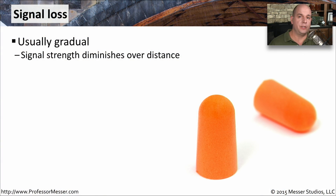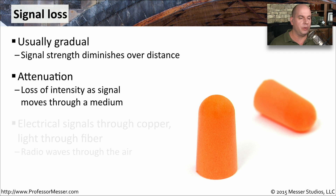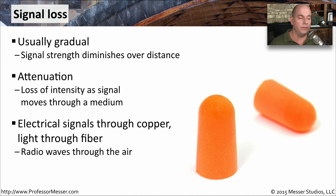Whenever you're working with cabling, whether it's copper or fiber, you always have to be concerned about loss of signal. We generally will have a loss of signal as the distance gets farther for both our copper and our fiber connections. We often refer to this as attenuation — the loss that a signal has as it moves through one of these types of mediums. You have electrical signals through a copper connection, light that travels through fiber, and radio signals that travel through air. As they move through these mediums, the signal will continue to degrade as the distance gets further and further away.